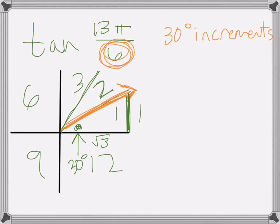And then if I'm looking for tangent, it's opposite over adjacent, or y over x. So 1 over radical 3, which, if I rationalize, the answer is radical 3 over 3 would be my answer there.